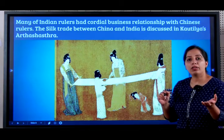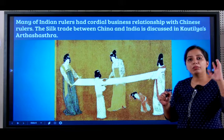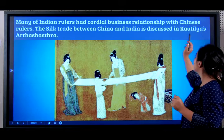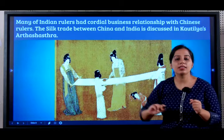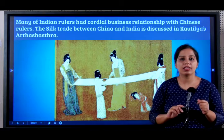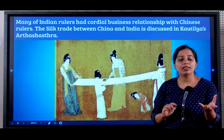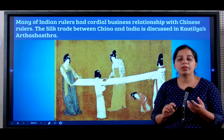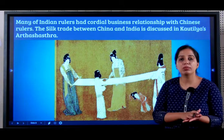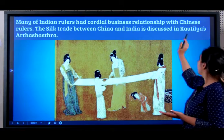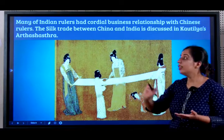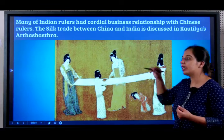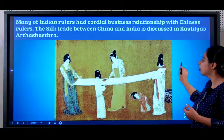This silk trade is documented in books from ancient India, specifically Kautilya's Arthashastra. Kautilya is none other than Chanakya, from the kingdom of Chandragupta Maurya. In his book Kautilya's Arthashastra, he writes about the silk trade between India and China.